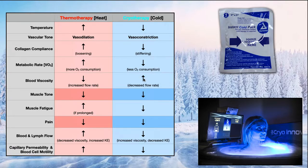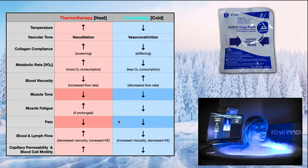Cryotherapy also results in increased blood viscosity, so in the area being treated we get a decreased flow rate of blood — not pathologically slow, but it does decrease the flow of blood in that area. Cryotherapy also decreases muscle tone, and notably this is one of the common features between cryo and thermotherapy — they both decrease muscle tone and they both decrease pain. Cryotherapy results in decreased muscle fatigue: muscles actually fatigue more slowly in the cold, whereas with thermotherapy muscles fatigue more quickly, especially if the heat is prolonged.